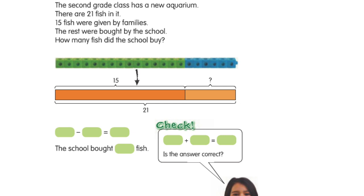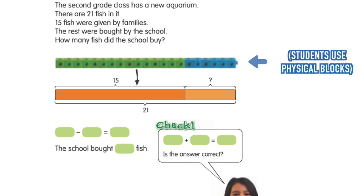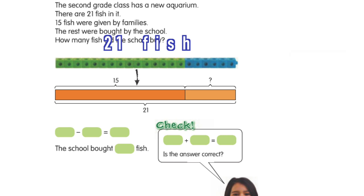In this problem the students would typically put together their blocks and then move into that more abstract thinking. In the abstract thinking they know that they have 21 fish and they know that 15 were given by families. A student might even label that with 'families.' Then they realize the question mark — that's what they're looking for.